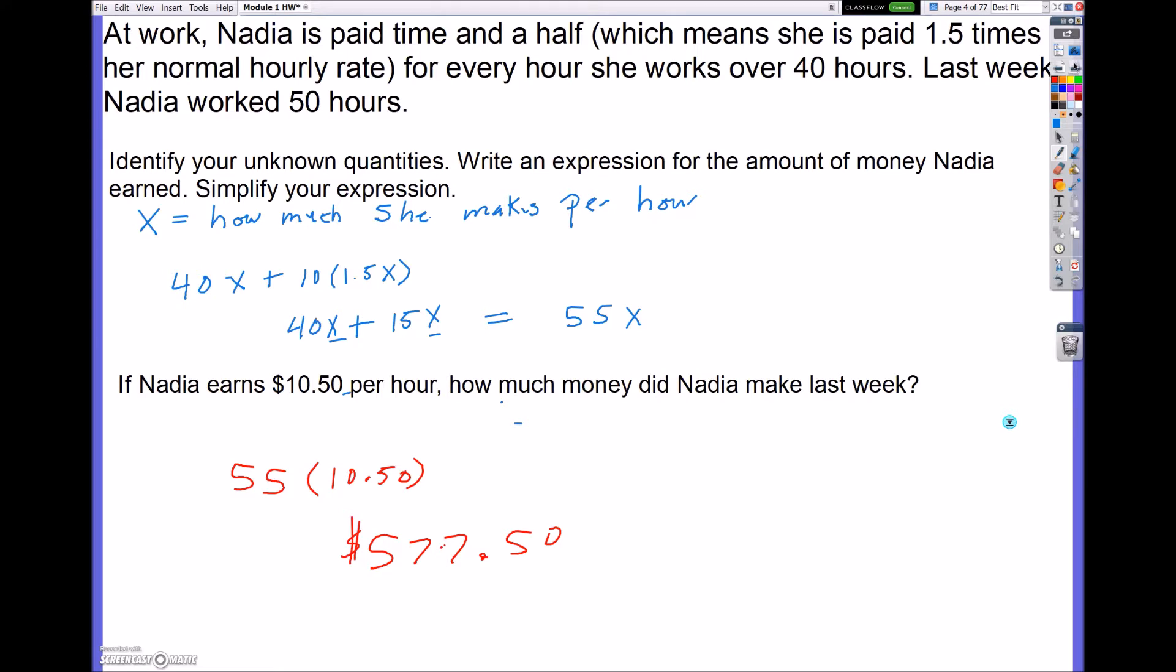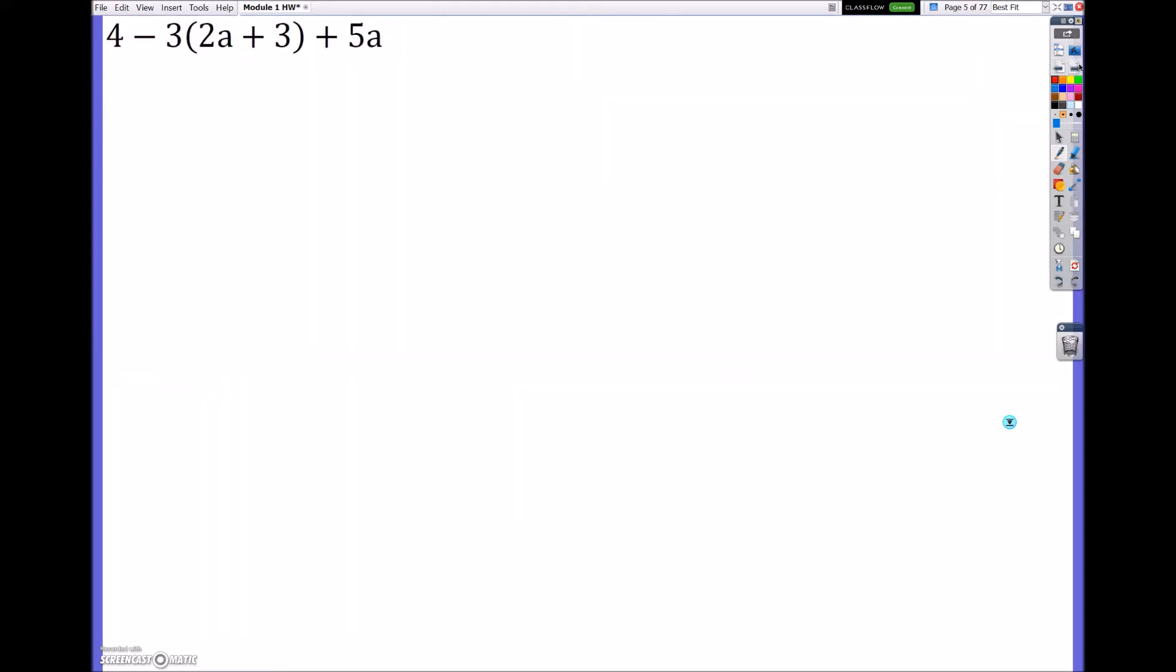So hopefully that helps with the word problems. We're just going to jump in and simplify some expressions now. So looking at these, what we want to be able to do is follow our orders of operations, and we want to combine variables with variables and constants with constants. Remember, constants are just numbers with no variables.